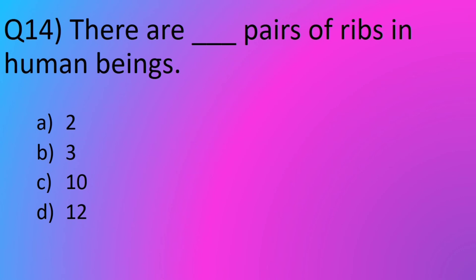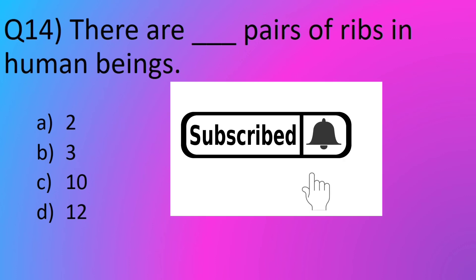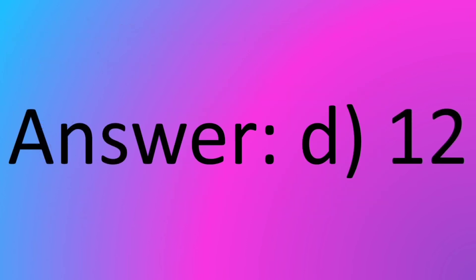Question No. 14: There are dash pairs of ribs in human beings. Option A: 2. Option B: 3. Option C: 10. Option D: 12. The answer is Option D: 12.